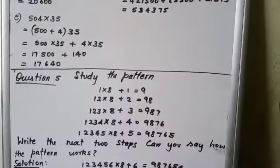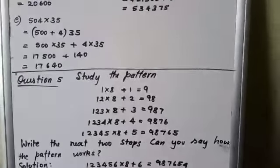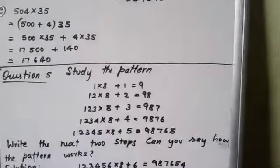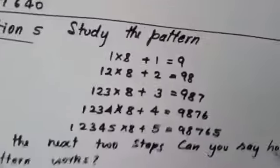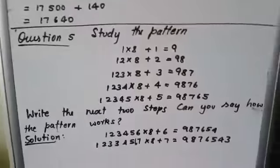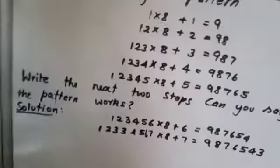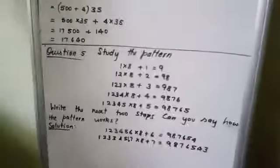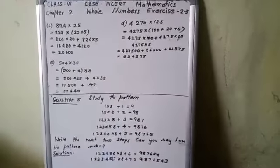So we are writing 123456×8+6=987654. 1234567, if we write, we will be getting the same 9876543. Here, the thing is, we have to be very careful with the numbers and we have to observe which pattern it is following. By observing only we will get the ideas. So main thing is our thinking skill and observation must be very, very important. Hope you understood this exercise easily.